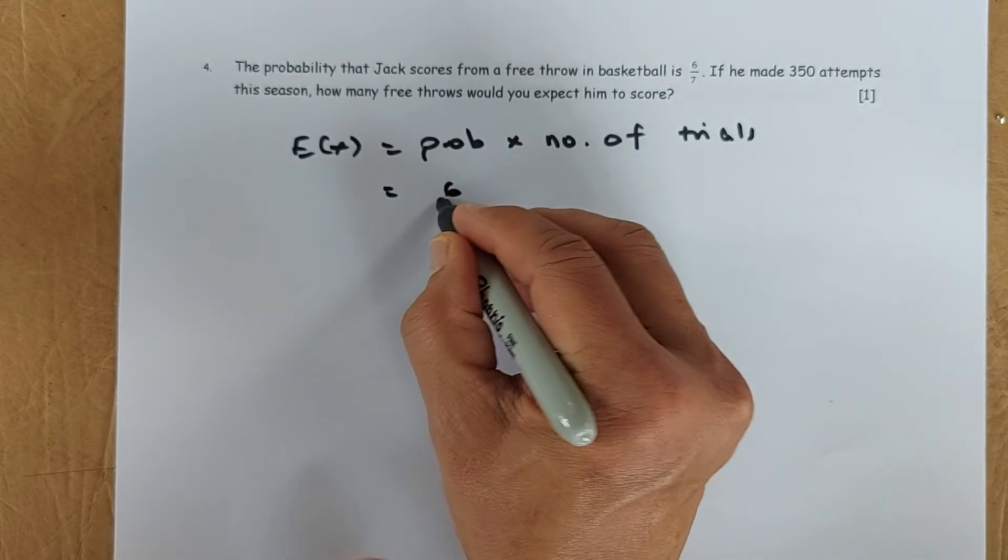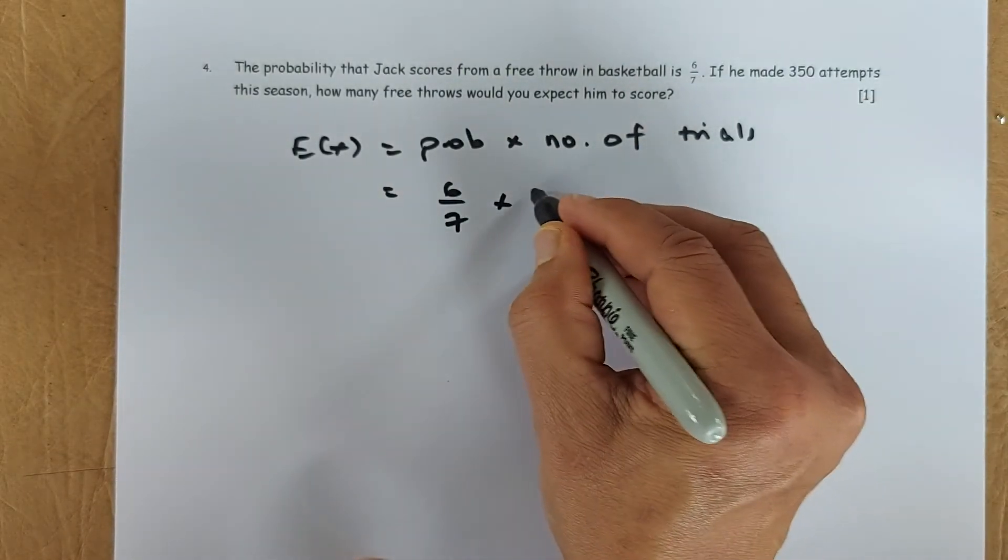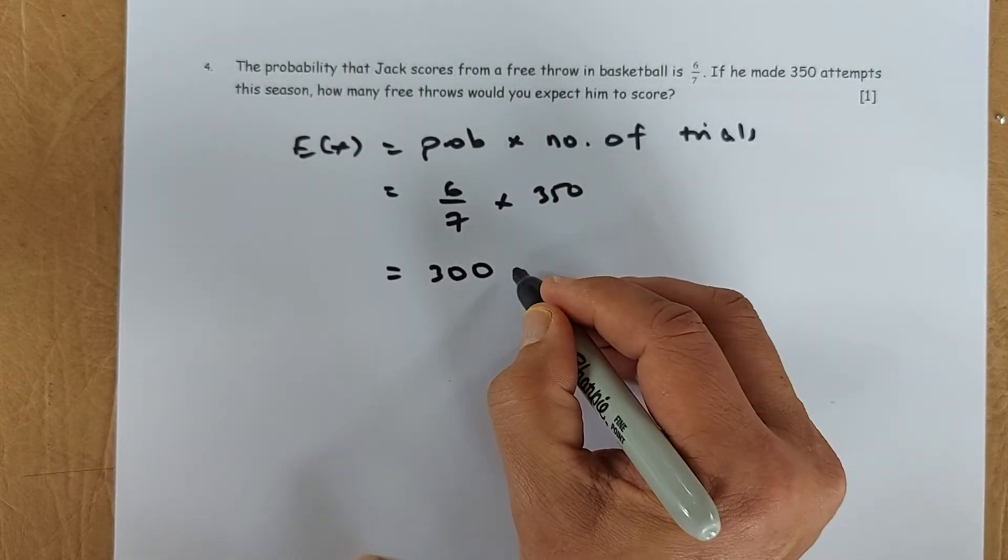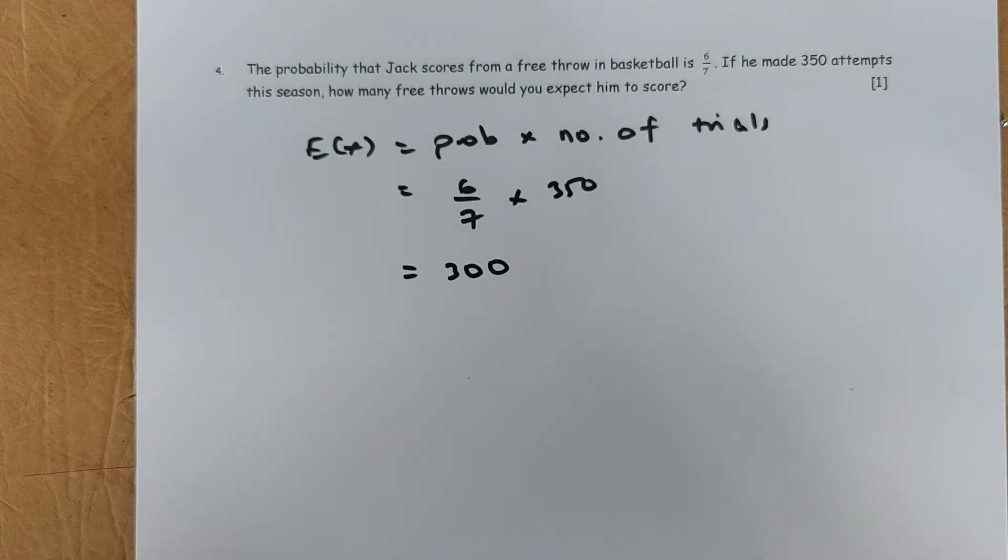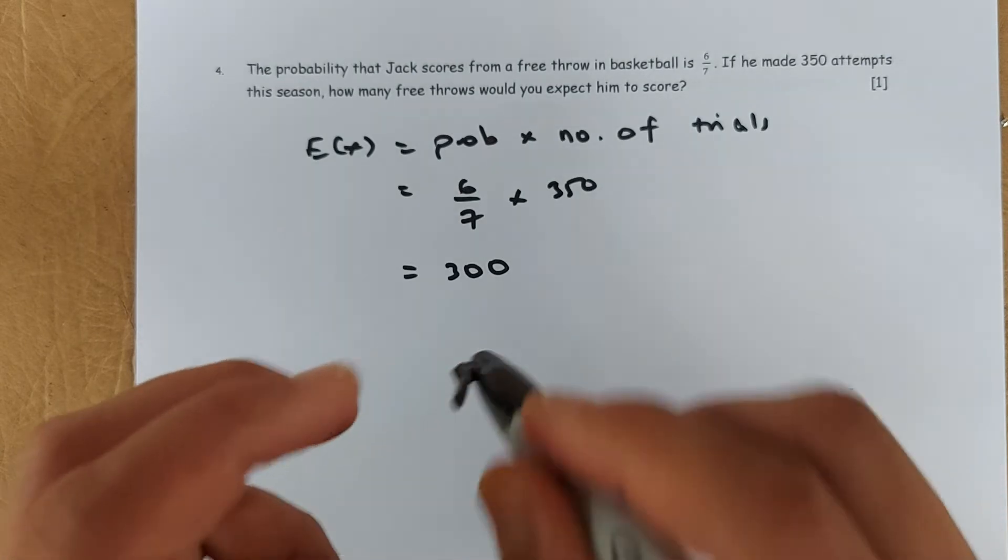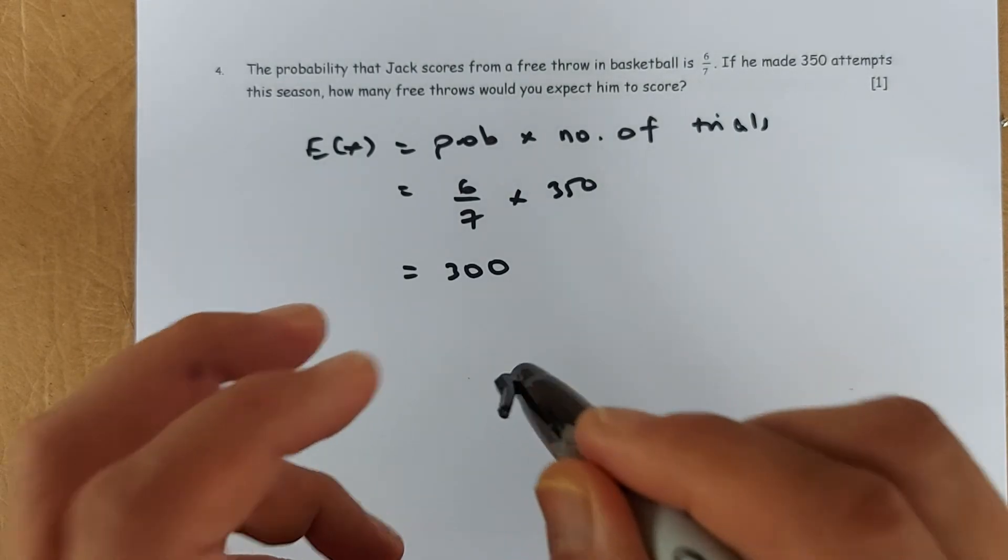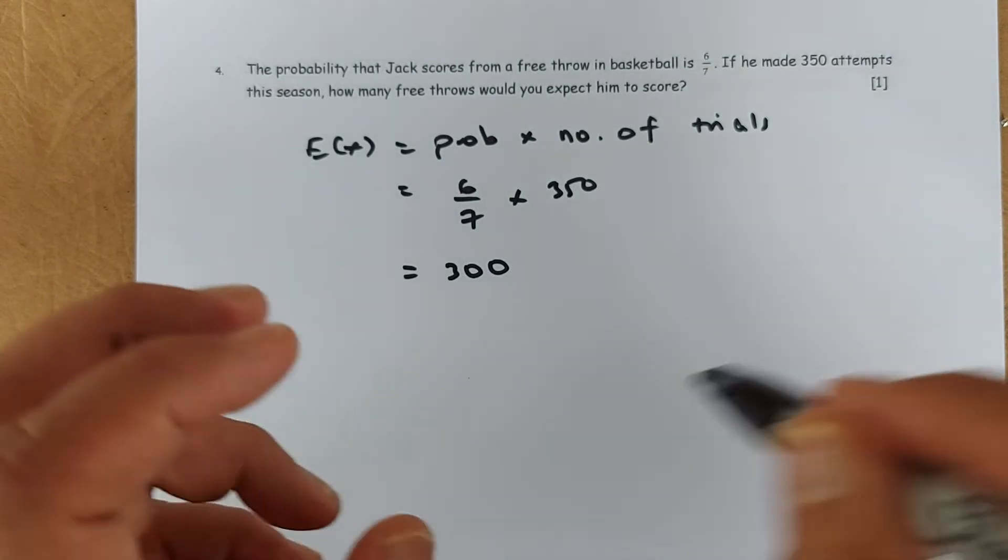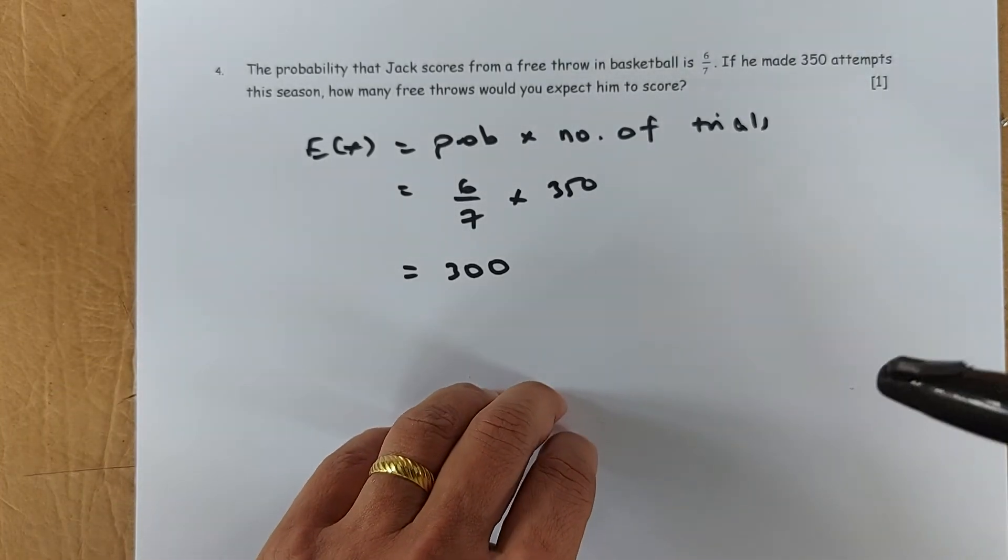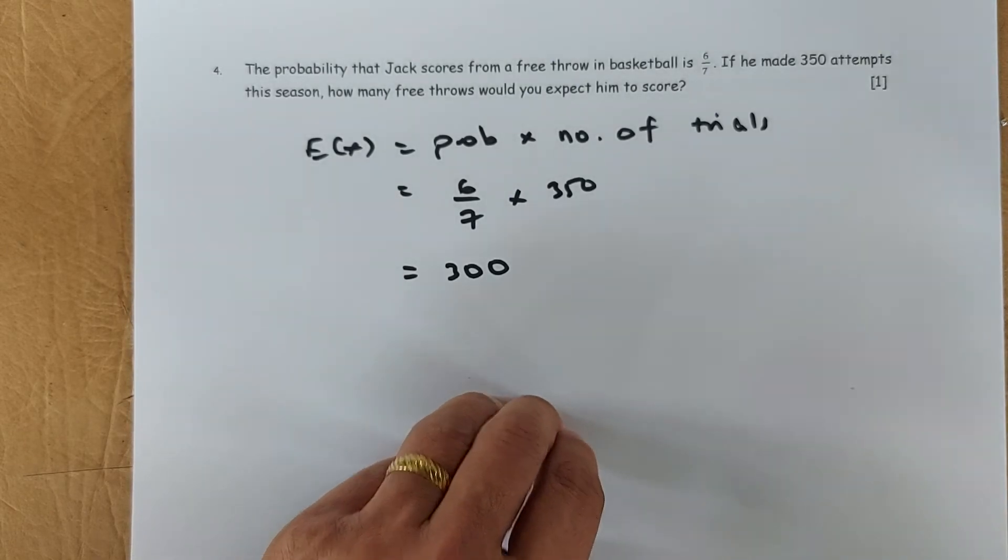So it's going to be probability is 6 over 7 and number of trials is 350. Put your calculator, it's 300. So he's going to score 300 free throws in a season. If the answer is a decimal or a fraction, you have to put it as a whole number, because in the expected value it has to be a whole number. It cannot be a fraction or a decimal. You either round up or round down the answer.